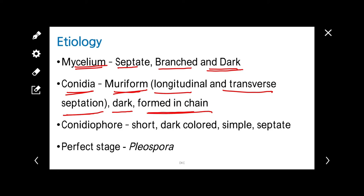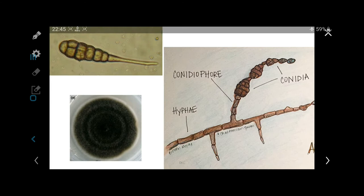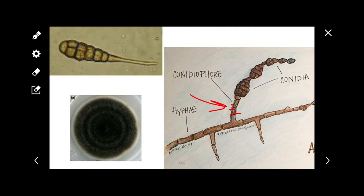The perfect stage is Pleospora. The conidia of Alternaria shows transverse and longitudinal septation. Conidiophores are septate and simple. The colony, when observed, shows a characteristic ring pattern.